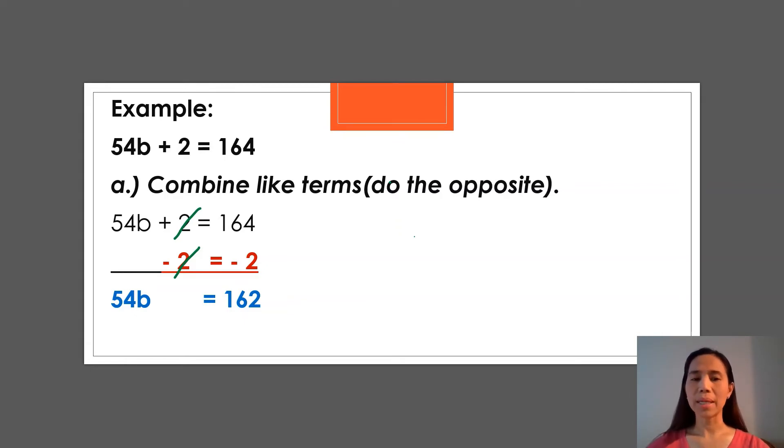Now we just bring this down, 54b, because we didn't do anything yet. We just copy it or bring it down first. Next thing. Since we have 54b = 162, there are no more terms that are the same or alike. So what do we do next? Since we said a while ago that coefficient with the variable means multiplication, so that means the operation for this is multiplication.